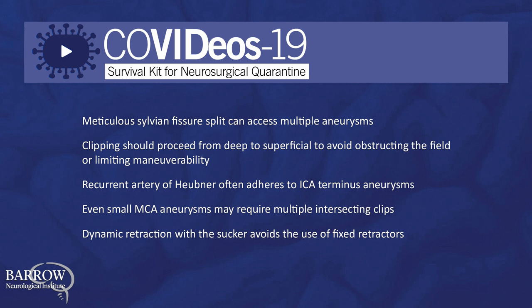In conclusion, meticulous sylvian fissure split accesses multiple aneurysms in one surgical stage. Clipping should proceed from deep to superficial to avoid clips obstructing the field or limiting maneuverability. The recurrent artery of Huebner often adheres to the backside of internal carotid artery bifurcation aneurysms. Even small MCA aneurysms may require the multiple intersecting clip construct shown here. Dynamic retraction with the sucker avoids the use of fixed retractors.